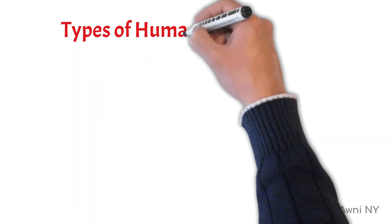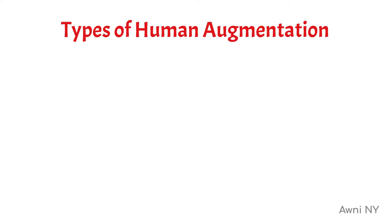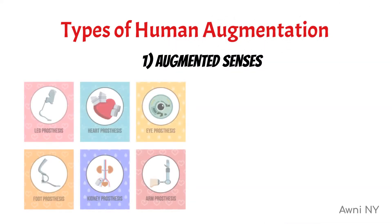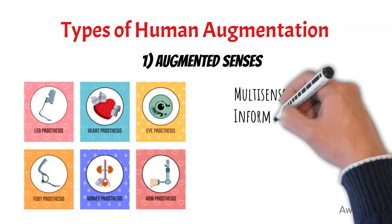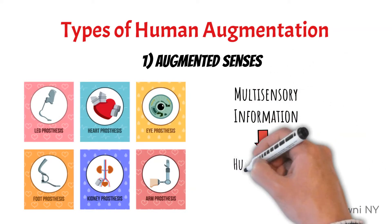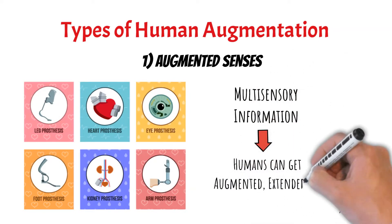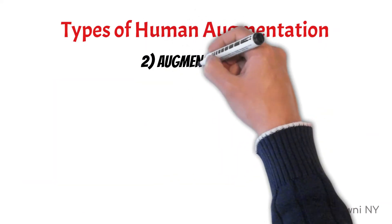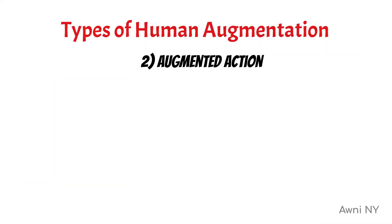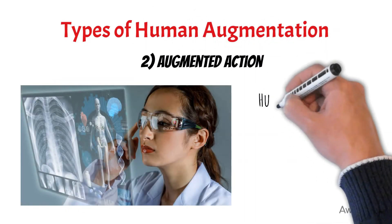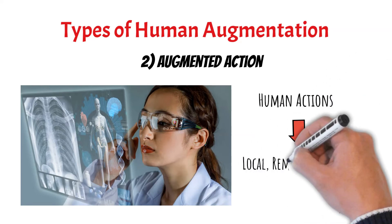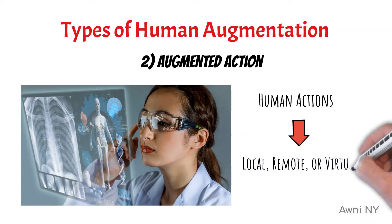Types of Human Augmentation. 1. Augmented Senses: Through the interpretation of available multi-sensory information, humans can get augmented, extended, or enhanced senses. 2. Augmented Action: This type of tech is all about sensing specific human actions and mapping them in local, remote, or virtual environments.